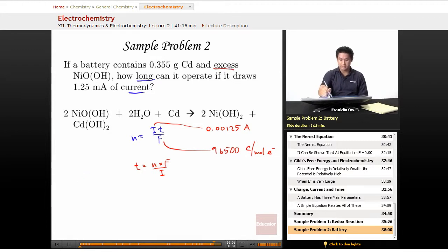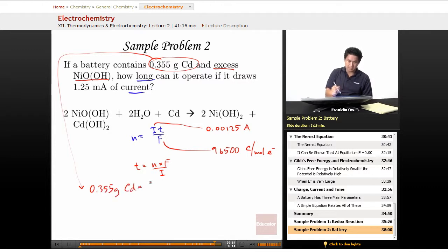You are told that you have an excess amount of the nickel precursor, so the 0.355 grams cadmium is going to be our limiting reactant here. So 0.355 grams of cadmium times 1 mole of cadmium divided by 112.41 grams. Now, that's going to be equal to 0.00316 moles of cadmium solid.